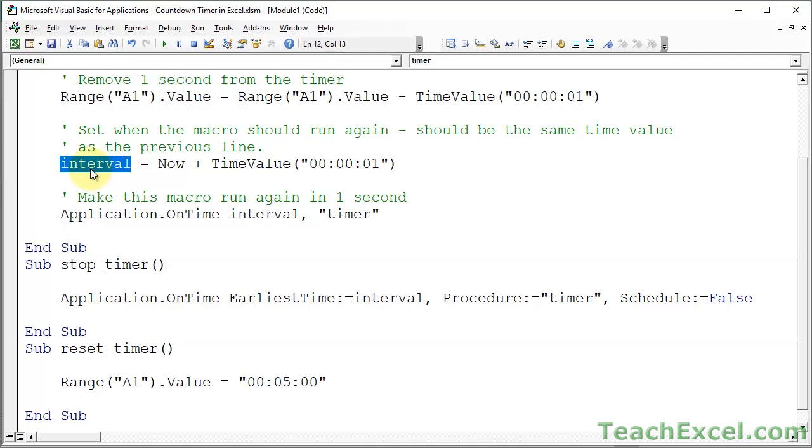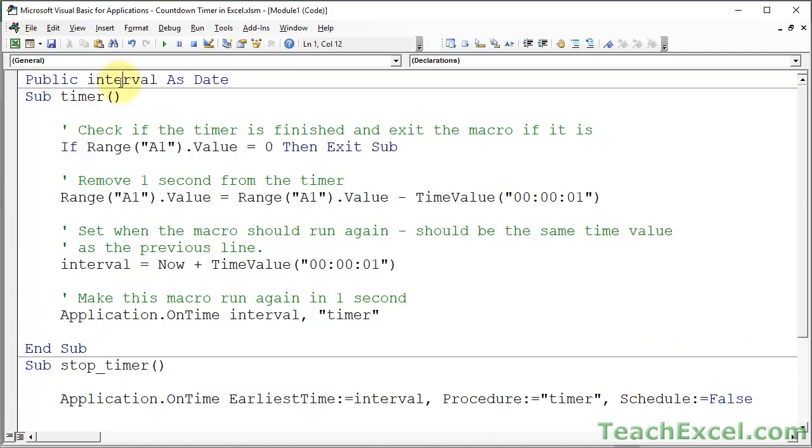notice that at the very top up here, we have declared this variable as a public variable. That allows me to use it up here in timer and then reuse it down here in stop timer.